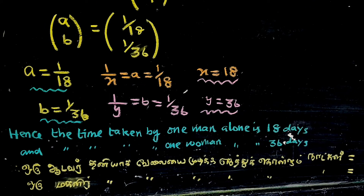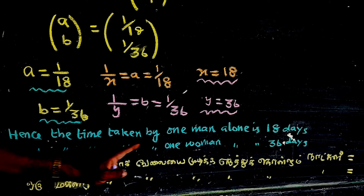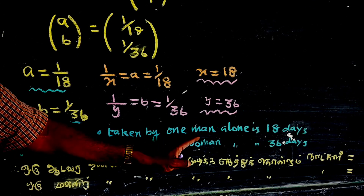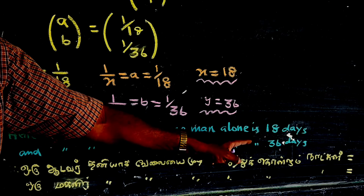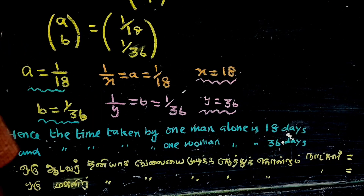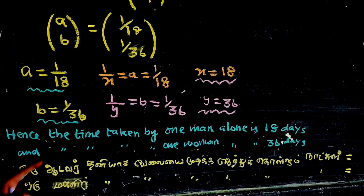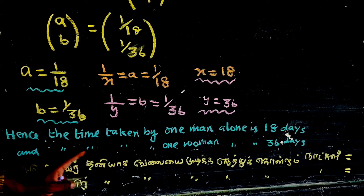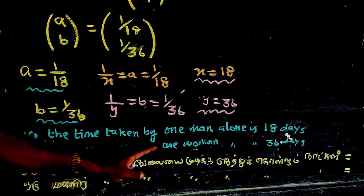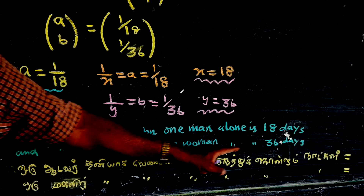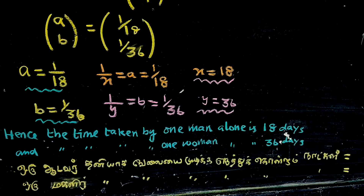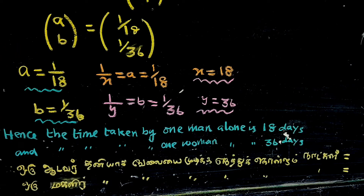So the time taken by one man alone is 18 days, and the time taken by one woman alone is 36 days.